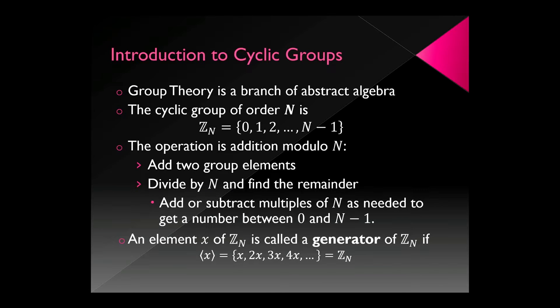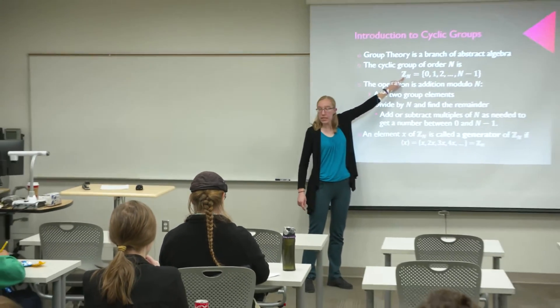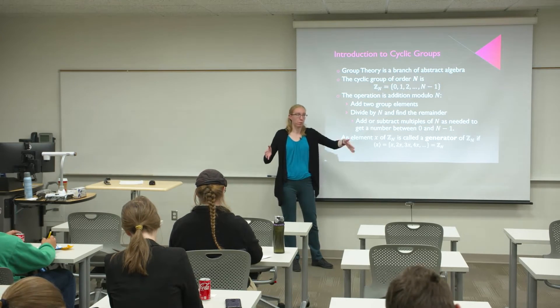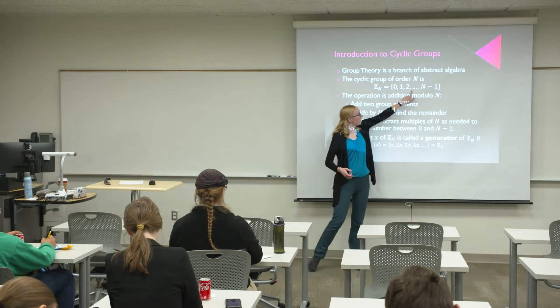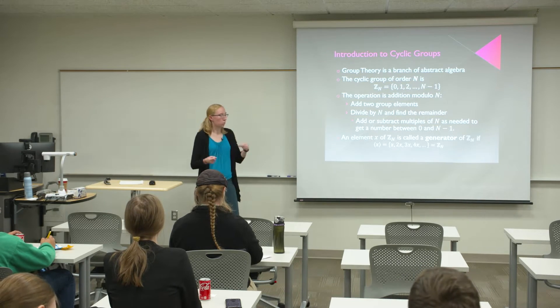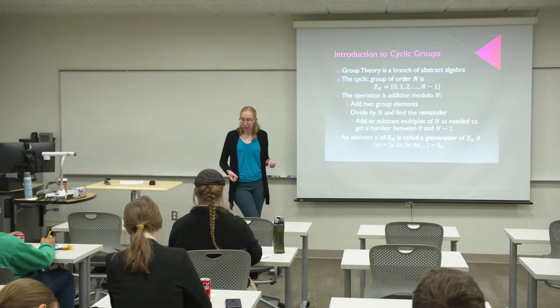Cyclic groups. Group theory is a branch of abstract algebra — sometimes called modern algebra. Now you can tell your parents or professors that you know group theory. The specific thing we need is the cyclic group of order n, denoted Zn. It's all of the numbers from zero up to n minus one: 0, 1, 2, 3, up to n minus one. The operation — how we combine those numbers — is we add them modulo n, or mod n for short.